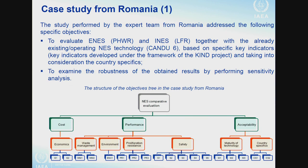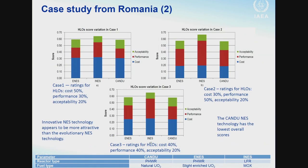Romania performed a case study comparing enhanced nuclear energy systems including PHWR with slightly enriched fuel, and lead fast reactors. They conducted results under different weight assumptions — for example, cost 50%, performance 30%, acceptability 20% — then changed these preferences to see the results. It is interesting that the innovative nuclear energy system showed the best score under all these assumptions.